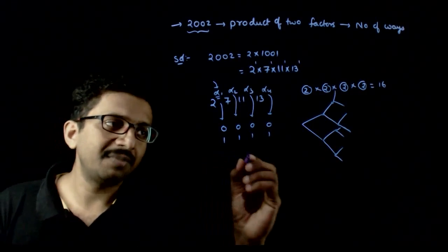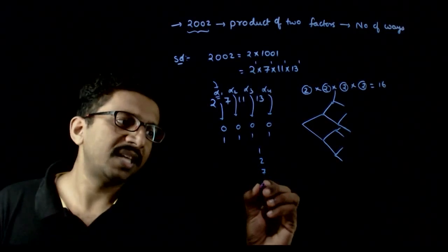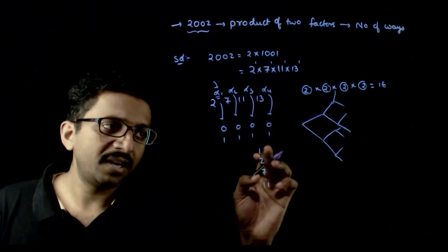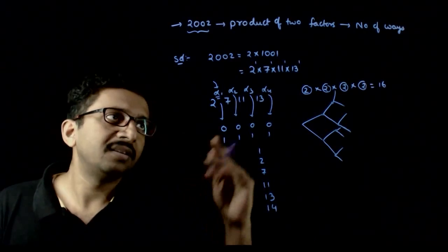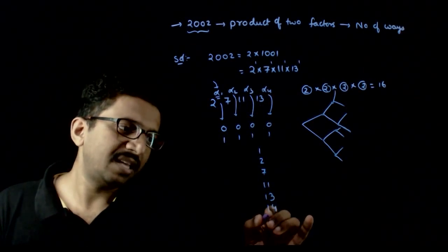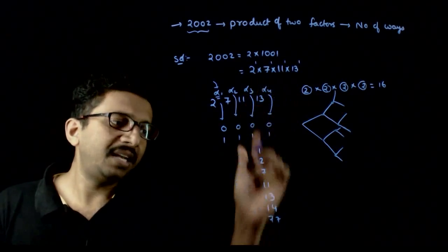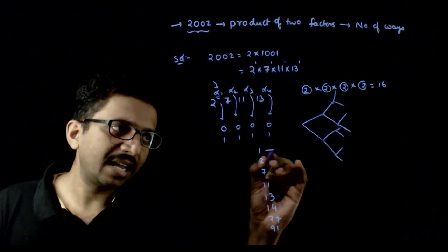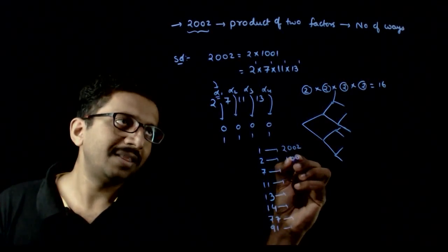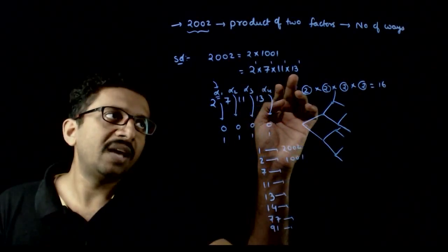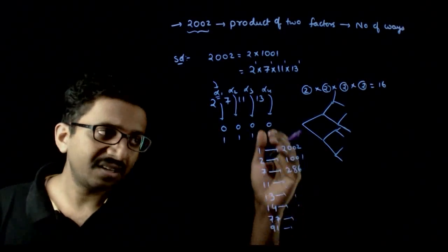The 16 factors include 1, 2, 7, 11, 13, 14 (which is 7 into 2), 77 (which is 7 into 11), 91 (which is 11 into 13 or 7 into 13), and so on. You have 8 factors and corresponding to each of these factors you have a complementary factor: 1 into 2002, 2 into 1001, 7 into 286 (which is 2 into 11 into 13), and so on — giving 16 different factors in total.